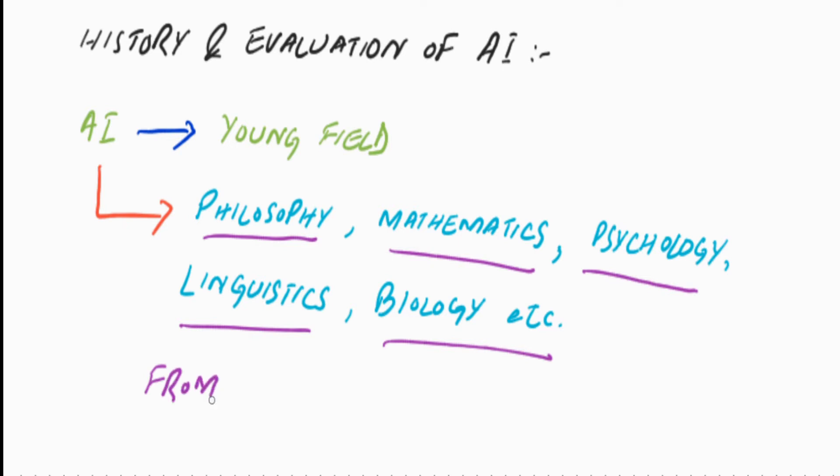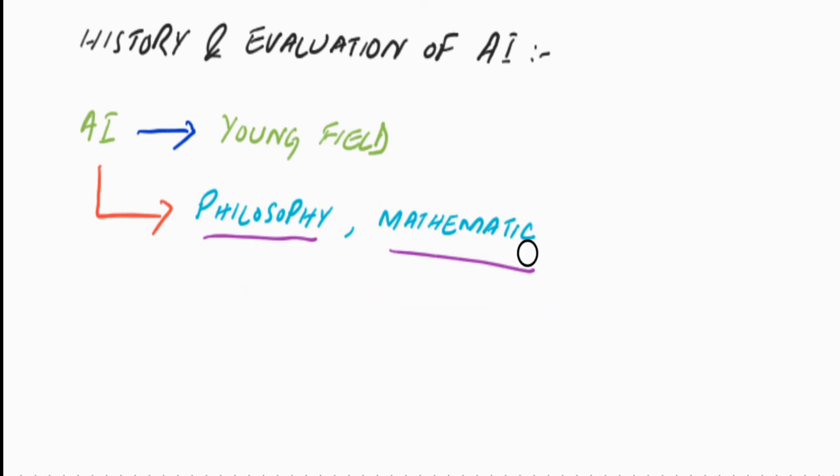Finally, from computer science, we have the tools and concepts to make artificial intelligence a reality. Now coming back to the history and evaluation of artificial intelligence.